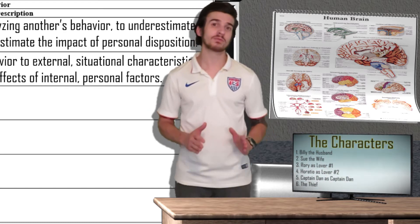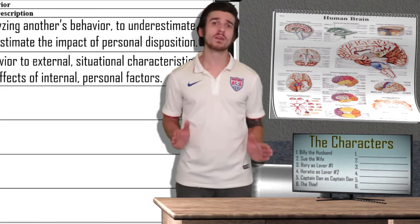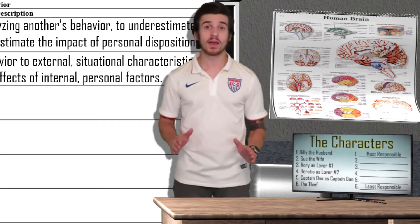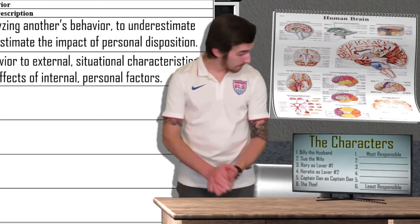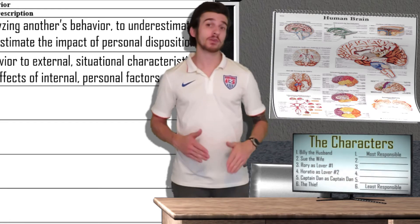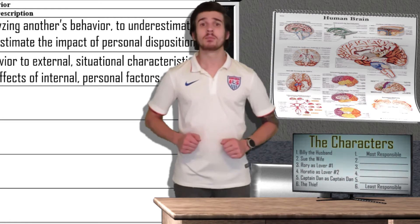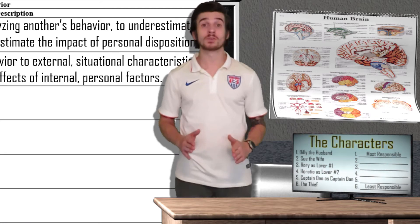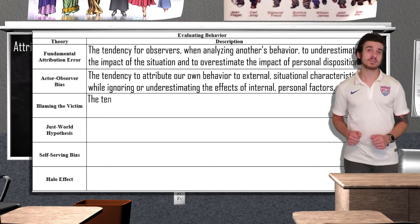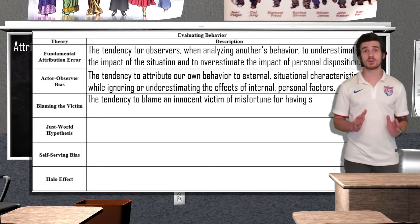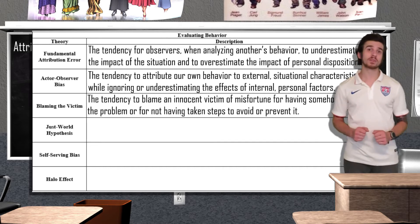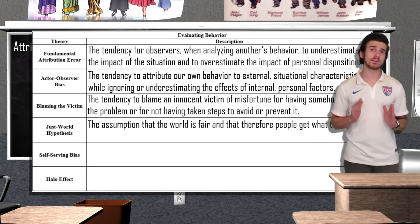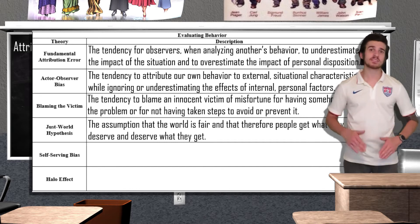What I want you to do is form a list from one to six, determining who is responsible for Sue's death — one being the most responsible and six being the least responsible. Pause the video and think about how you would order your list. Hopefully you had some time to think. When told this story, oftentimes people place Sue at the number one or two spot on this list. In social psychology, this is known as blaming the victim. Victim blaming is the tendency to blame an innocent victim of misfortune for somehow having caused the problem or for not taking steps to avoid or prevent it. According to social psychologist Melvin Lerner, victim blaming oftentimes occurs as a result of the just world hypothesis — the assumption that the world is fair and therefore people get what they deserve and deserve what they get.